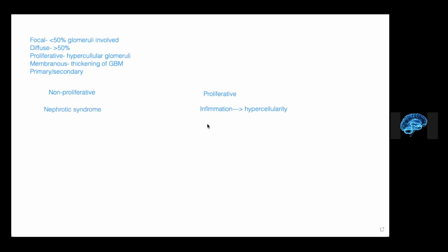Non-proliferative and proliferative. Basically, one has hypercellular glomeruli and the other doesn't. If you have hypercellular glomeruli, it means there's inflammation leading to the hypercellularity. If it's non-proliferative, you don't have any increase in cells in the glomerulus — and those are your nephrotic syndrome. If you have inflammation and hypercellularity, that's your nephritic syndrome.